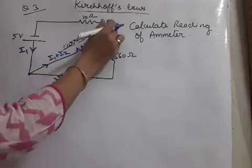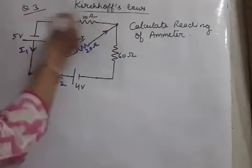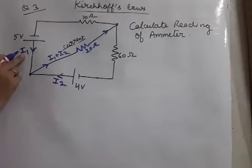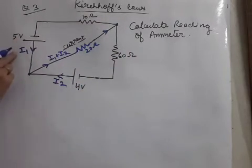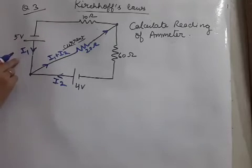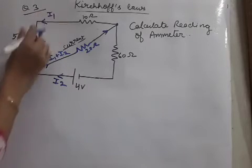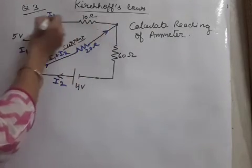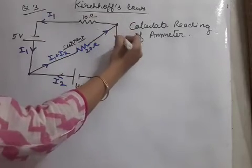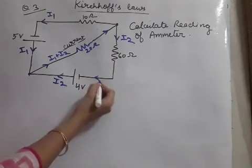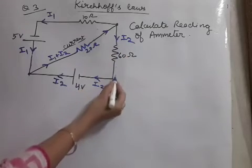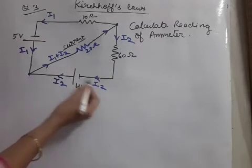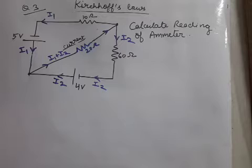Now this current I₁ plus I₂ will reach here at the junction. From I₁ plus I₂, which current will go here and which current will go here? The battery rule, whatever current the battery gives, same we have to return it. So we have to return it I₁. That means from I₁ plus I₂, I₁ will go here and remaining current means I₂ will go here. And you see, I₂ is reaching in the battery again and that's what we wanted. So we have understood here KCL. This is all KCL.